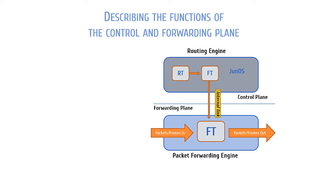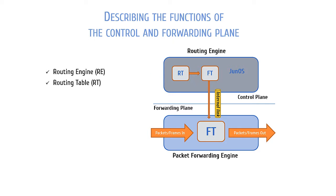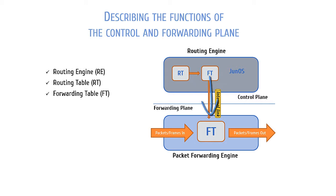When a packet or frame comes in on an interface, the control plane processes it through the RE or the routing engine. It checks that data against the routing table and then the forwarding table, and it comes to a determination on where the packet or frame needs to go based upon the device's configuration. The control plane then passes the instructions to the forwarding plane and the instructions are carried out. The packet will either be dropped or passed on to the outgoing or egress interface.